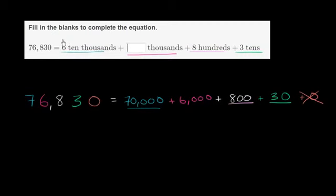So they have 6 ten thousands, which is the same as 60,000. We have 70,000. So they essentially took 10,000 from here and regrouped it someplace. Since these two places are the same, they must have regrouped it into the thousands place. So let's try to do that.